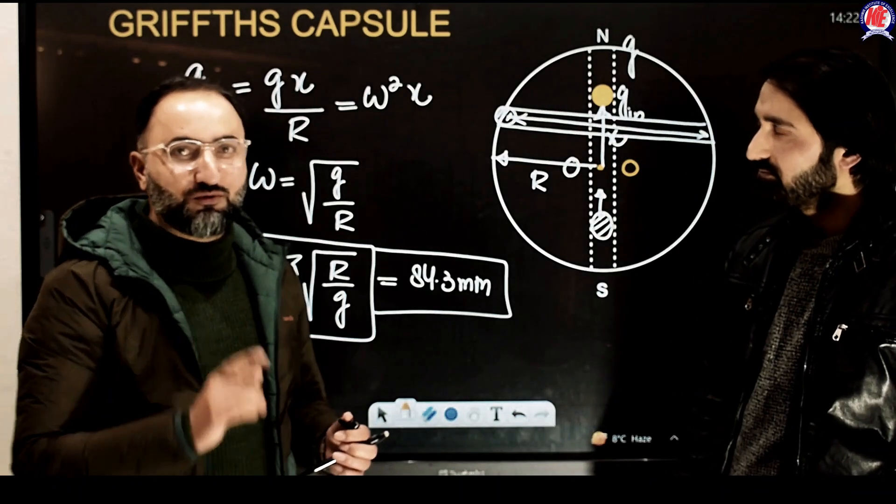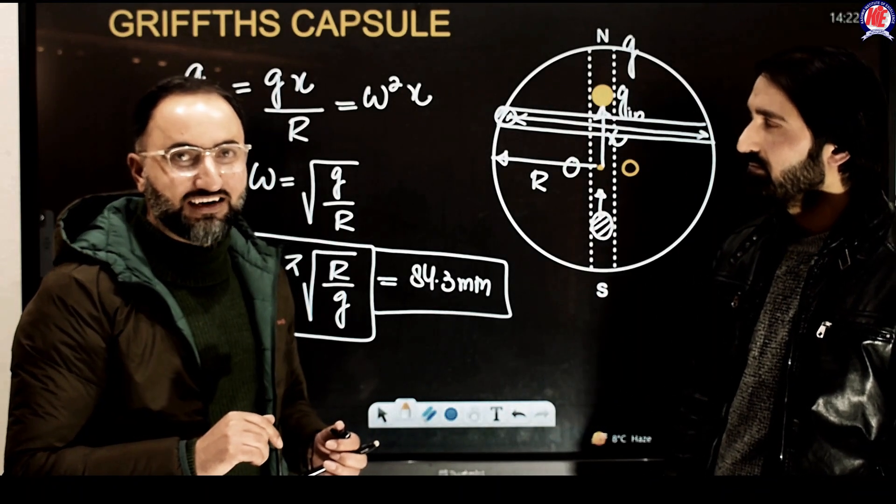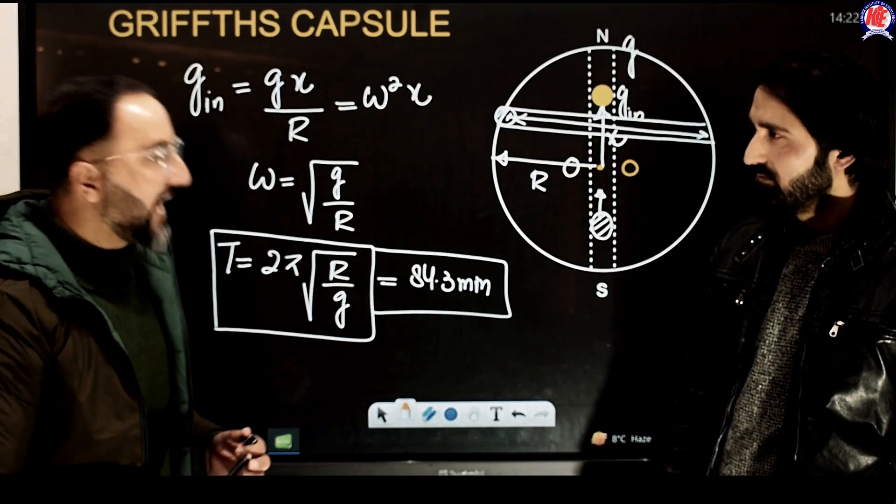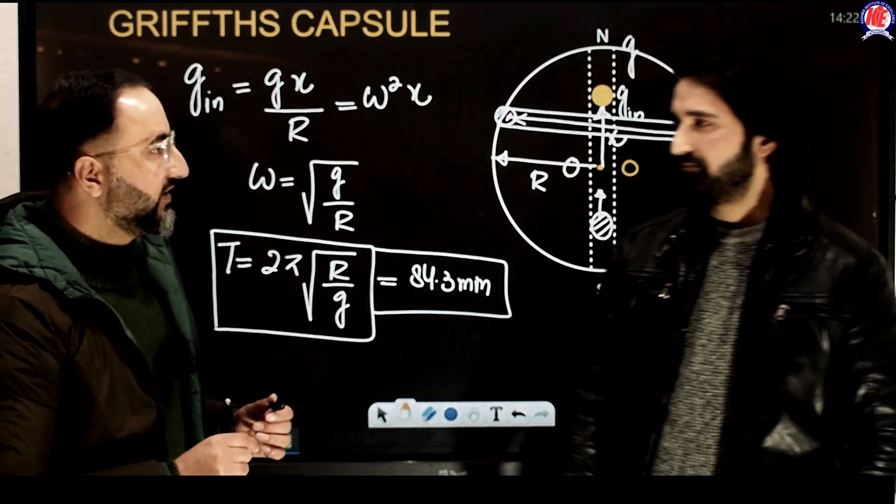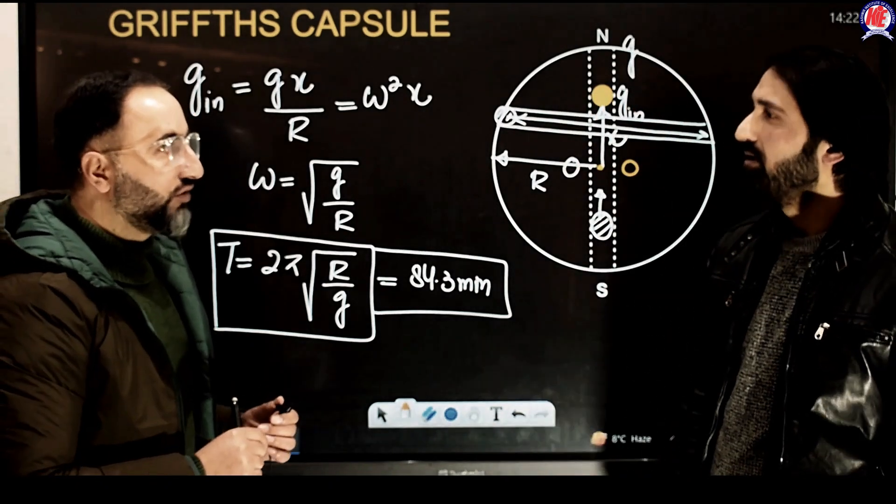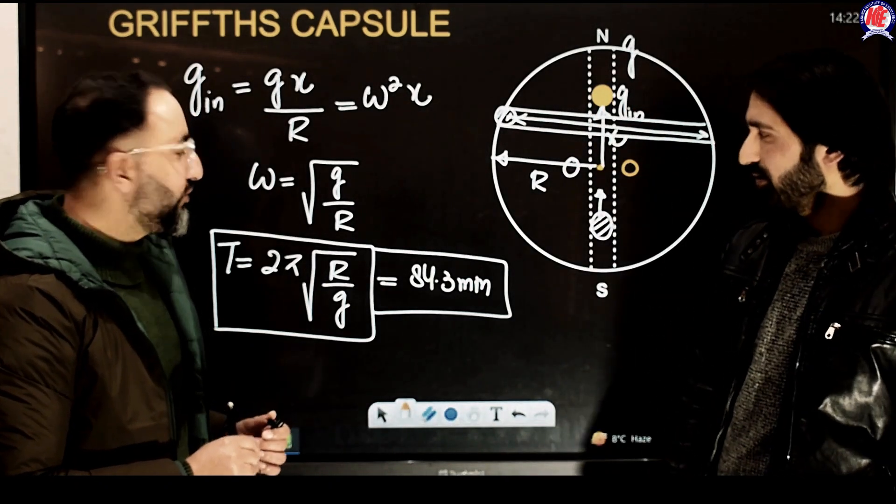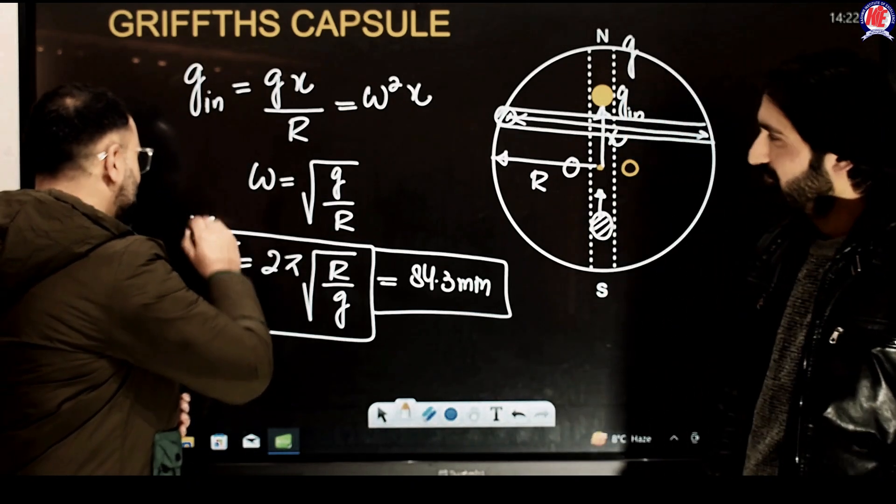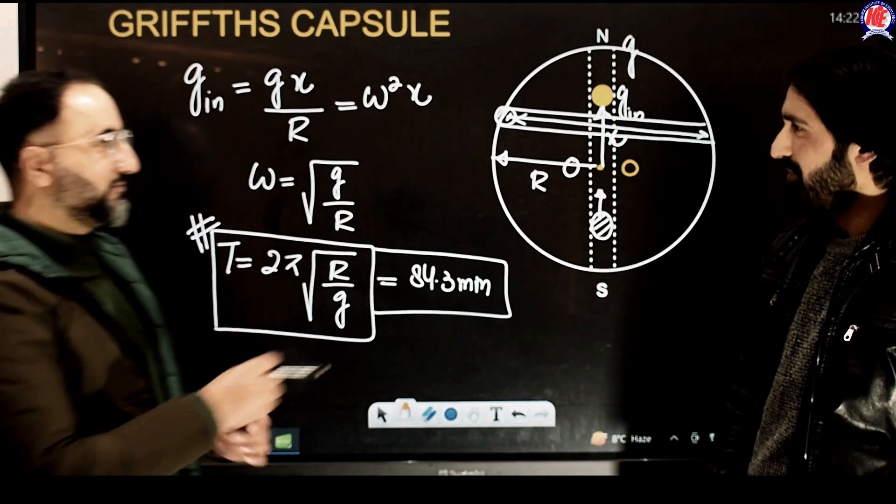Number three. One more, this fascinating thing about it, that the time period of a simple pendulum of infinite length, when its length becomes infinite, very very large compared to the radius of Earth. Time period of that is also equal to 2π under root of r by g. So this beautiful number, this magical number, so many times it is repeated in physics.